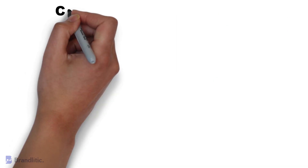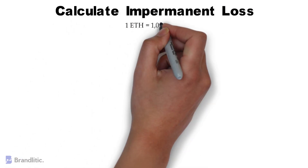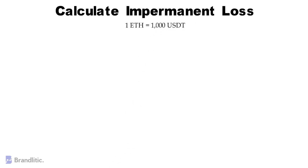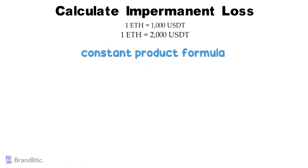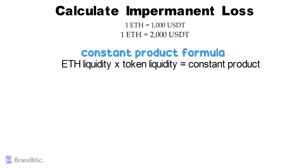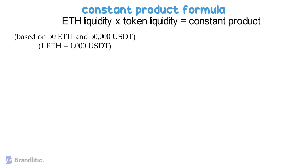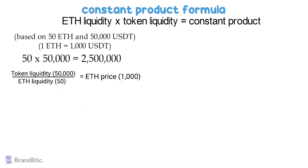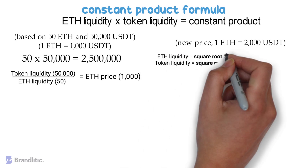Let's understand how to calculate impermanent loss. In our example, the price of 1 Ethereum was 1000 USDT. But let's say the price doubles and 1 Ethereum starts trading at 2000 USDT. Since the pool is adjusted by an algorithm, it uses a formula to manage assets. The most basic and widely used one is the constant product formula, popularized by Uniswap. In simple terms, the formula states that the product of Ethereum liquidity and token liquidity results in a constant product. Using figures from our example — 50 Ethereum and 50,000 USDT — we get 2.5 million. Similarly, the price of Ethereum in the pool can be obtained with this formula, and applying our example figures gives us 1000 USDT, which is the original price. When the price of Ethereum changes to 2000 USDT, we can use these formulas to ascertain the ratio of Ethereum and USDT held in the pool by calculating Ethereum liquidity and token liquidity.